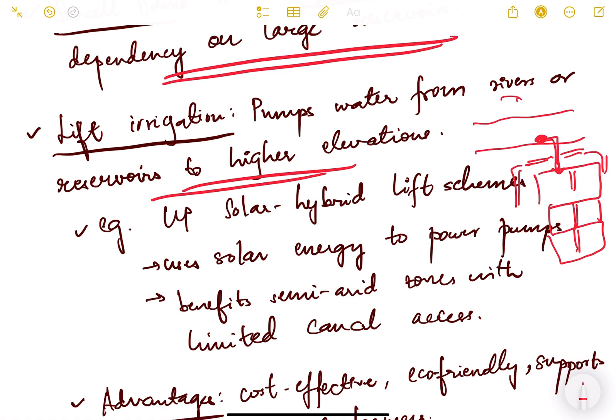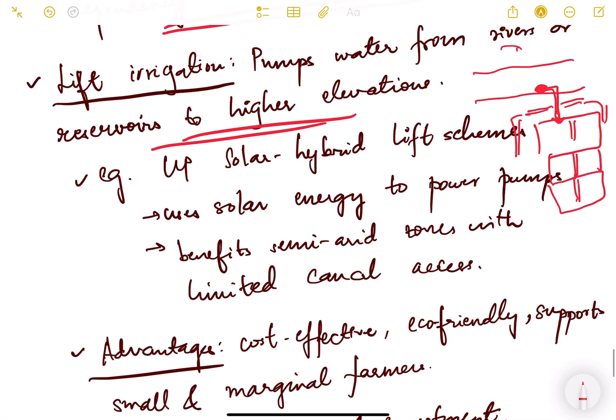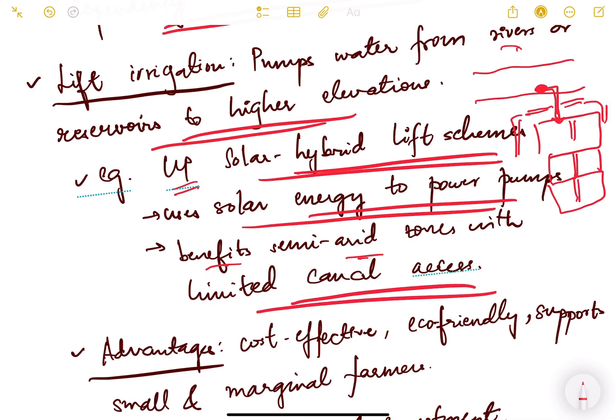Example of lift irrigation is in Uttar Pradesh—solar hybrid lift schemes. It uses solar energy to power pumps. This benefits semi-arid zones with limited canal access.